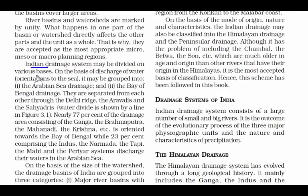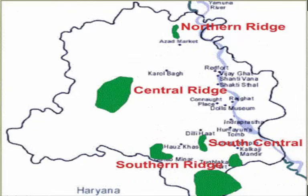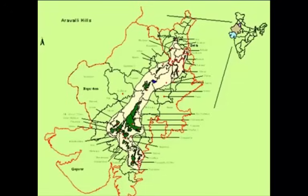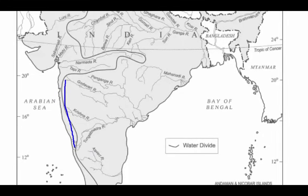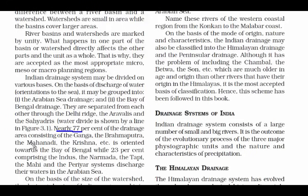The Indian drainage system may be divided into two categories: the Arabian Sea drainage and the Bay of Bengal drainage. The rivers are separated by the Delhi Ridge, the Aravalli Range, and the Western Ghats. Nearly 77% of the drainage area — consisting of the Ganga, Brahmaputra, Mahanadi, and Krishna — is oriented towards the Bay of Bengal.